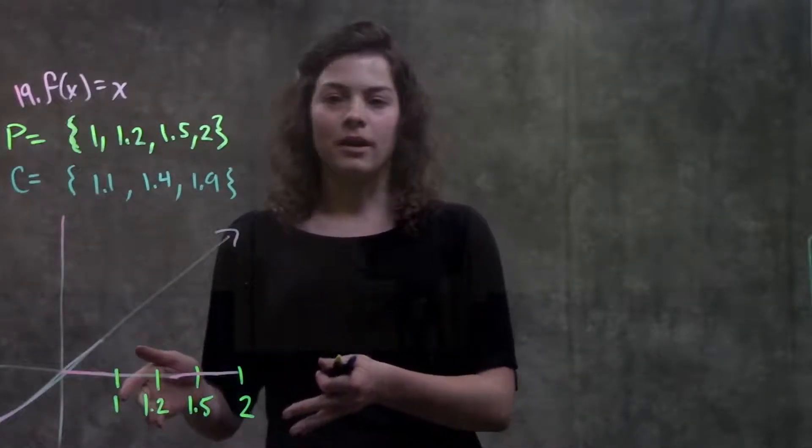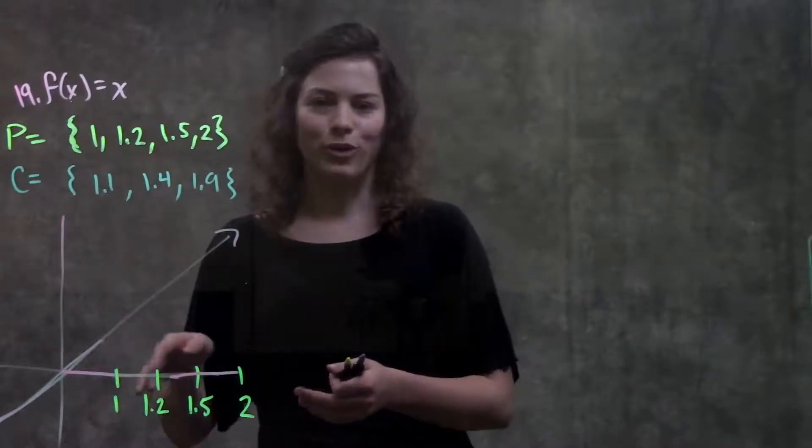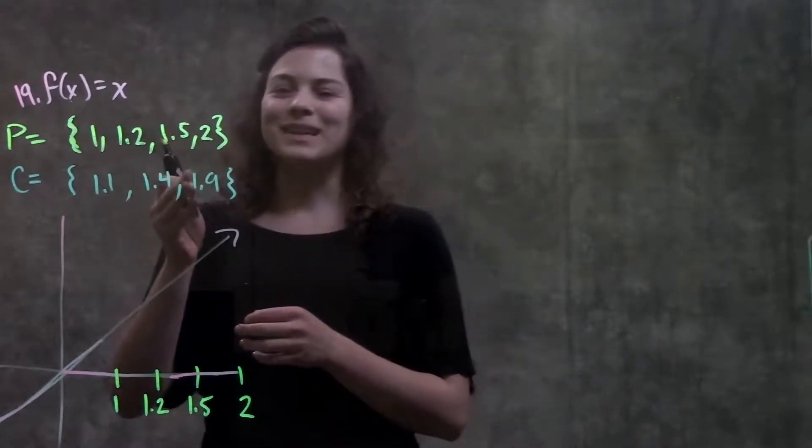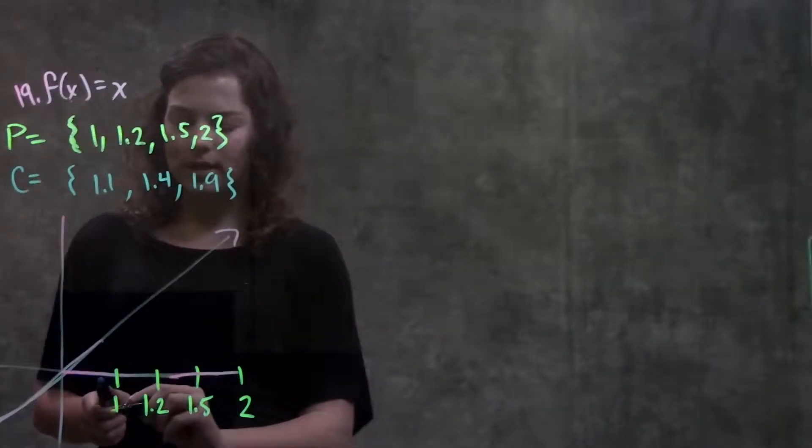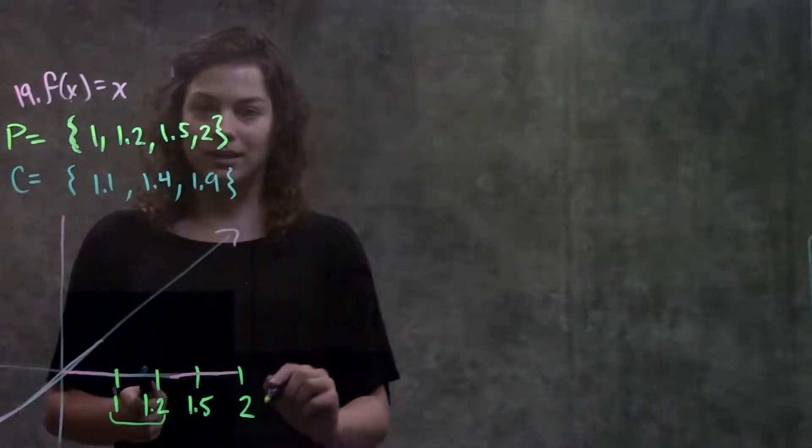So for example, I already kind of drew out this function more or less. So I labeled out the partitions. These are all the x values. From 1 to 1.2, that's 0.2 width, and so on and so on.